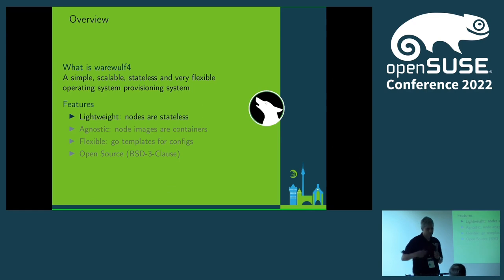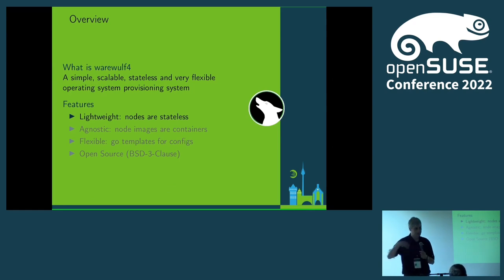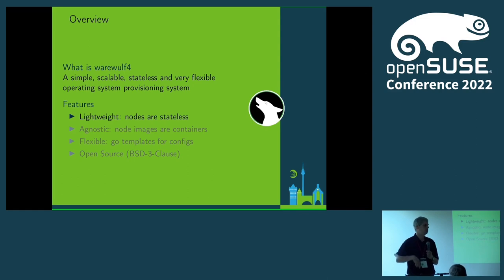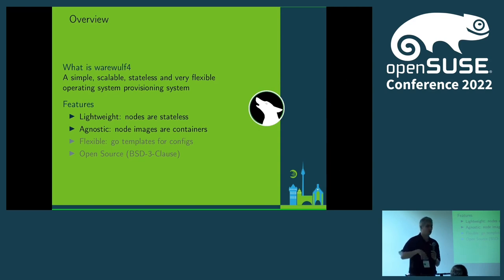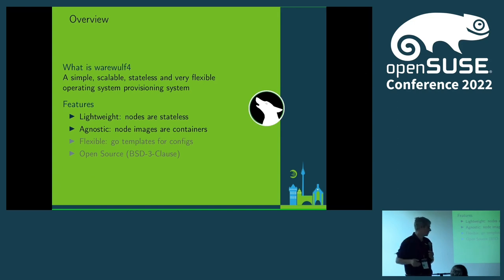It's very lightweight because the nodes are stateless, so they boot completely in RAM. If you think you will spoil RAM, that's not always the case — you can configure swap, and if there is memory pressure the whole operating system would be swapped out. Warewulf itself is agnostic against the operating system, so you can run it on a Leap host and deploy Tumbleweed, or deploy CentOS, or deploy anything else.